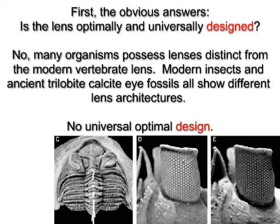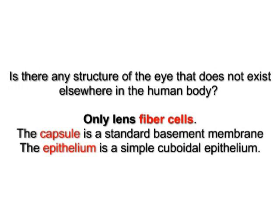Modern insects and ancient trilobite calcite eyes show different lens architectures — so note a universal optimal design is absent. Is there any structure of the eye that does not exist elsewhere in the human body? Only the lens fiber cells. The capsule was a standard basement membrane. The epithelium is a standard simple cuboidal epithelium.